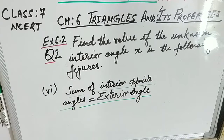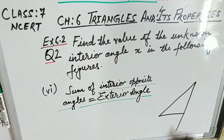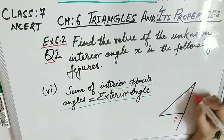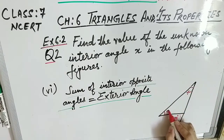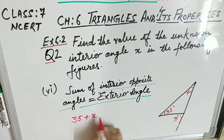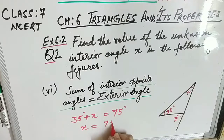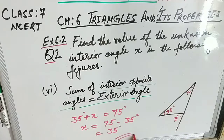Figure 6: the exterior angle is 75° and the opposite interior angles are 35° and x. Applying the property: 35° + x = 75°, so x = 75° − 35° = 40°. That is the answer, and that concludes this class.